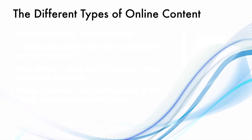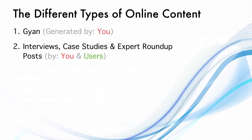Now let's look at the different types of online content. The first type is Gyaan, or knowledge-type articles. These are mostly generated by you, your ghostwriters, or your content team. The second type includes interviews, case studies, and expert roundup posts — partially generated by you and partially by other users.